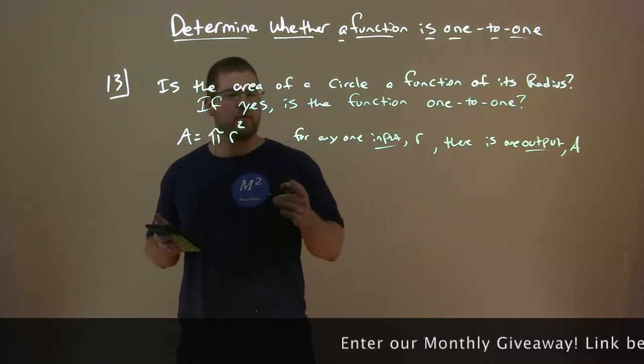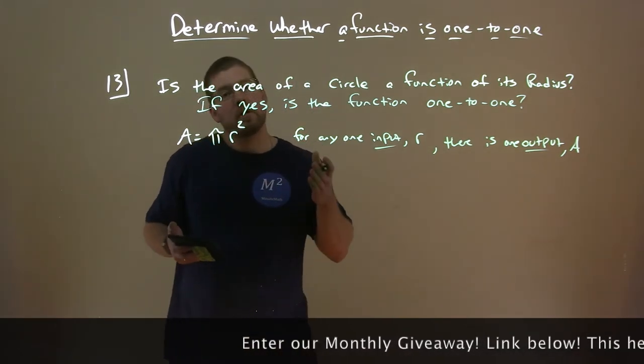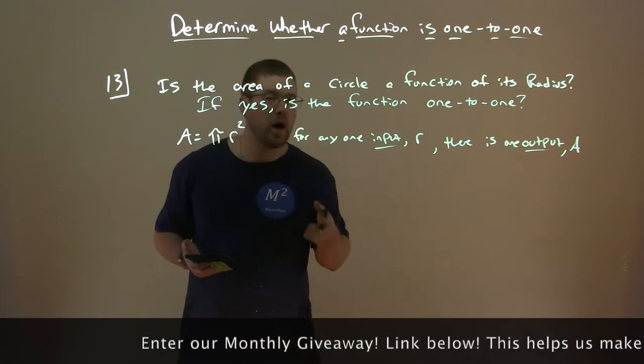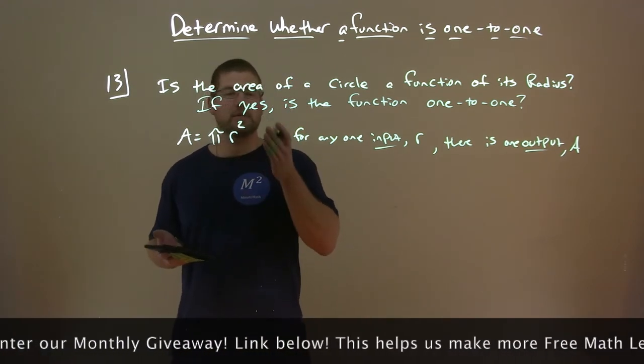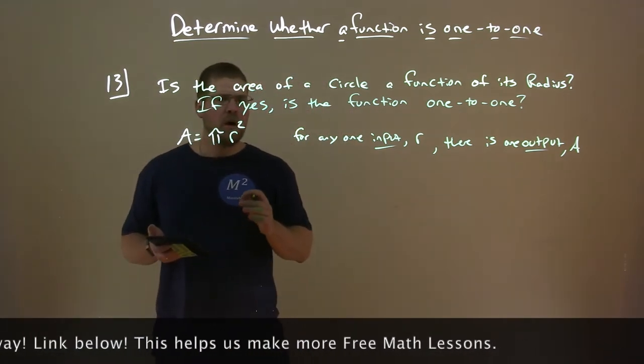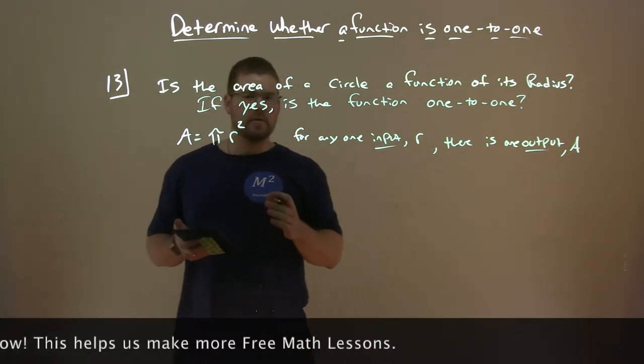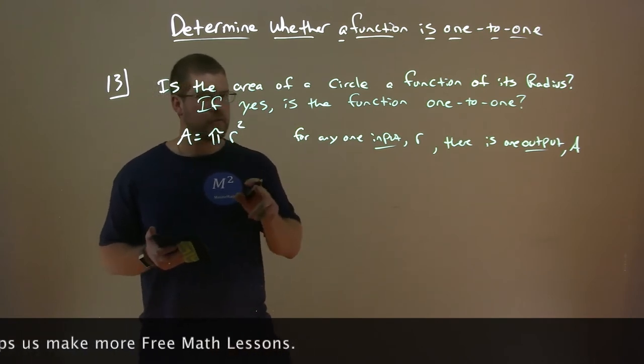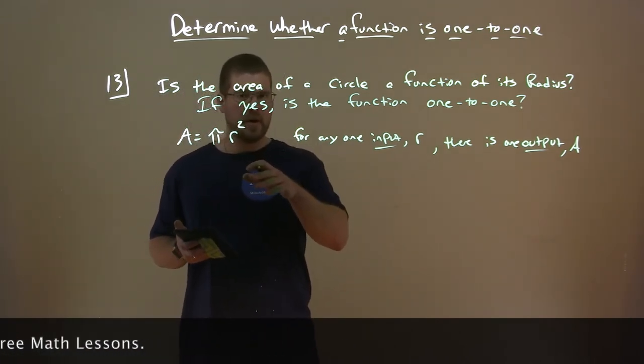So look at it. For every one input r, a radius of a circle—let's say of one—will only have one output area, which is just pi units squared. You can't have one without the other. Every one specific input, some radius, an r value put in,